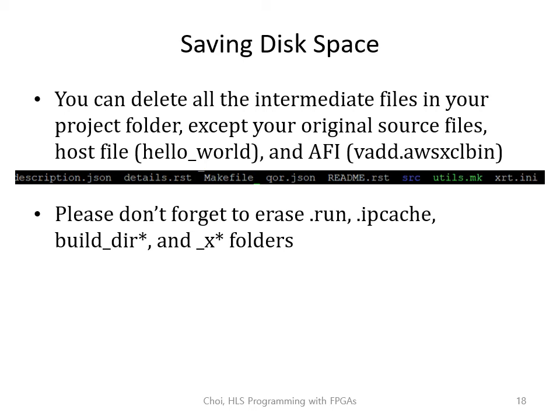Now you know how to create a new Vitis project. But every time you create a new project, there is a chance you might exceed your AWS SSD size. If you have adequate funding, consider using a larger SSD. If not, delete all intermediate files after you're done — you can keep your original source file, host file, and the AFI. Don't forget to delete hidden directories like the .run folder, which can become gigabytes after hardware emulation, and build directories that can easily become hundreds of megabytes.